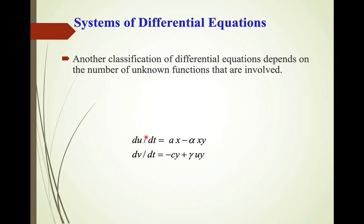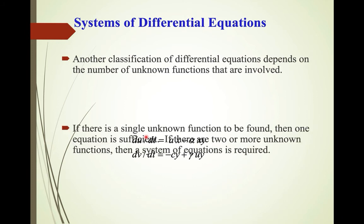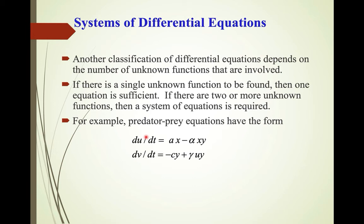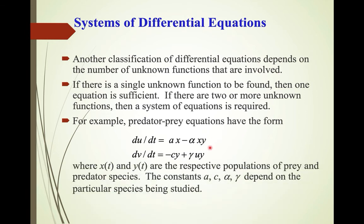Another classification of differential equations depends on the number of unknown functions involved. If there is a single unknown function to be found, then one equation is sufficient. If there are two or more unknown functions, then we will have a system of differential equations. An example is the predator-prey equations, where the dependent variables U and V are functions of time T, and A, alpha, C, and gamma are constants. X and Y represent the respective populations of prey and predator species.